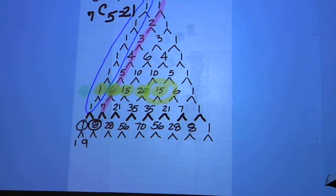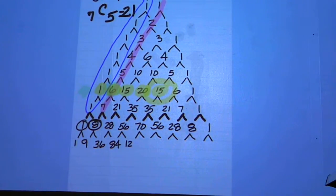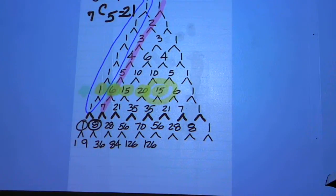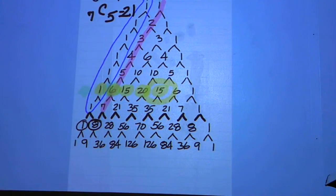And then the next one is the result of 8 plus 28, which is 36. And then add the rest of them up to get 84, 126, 126, 84, 36, 9, and then 1.